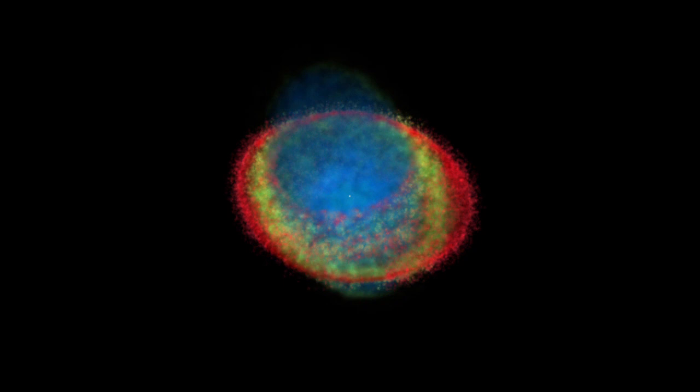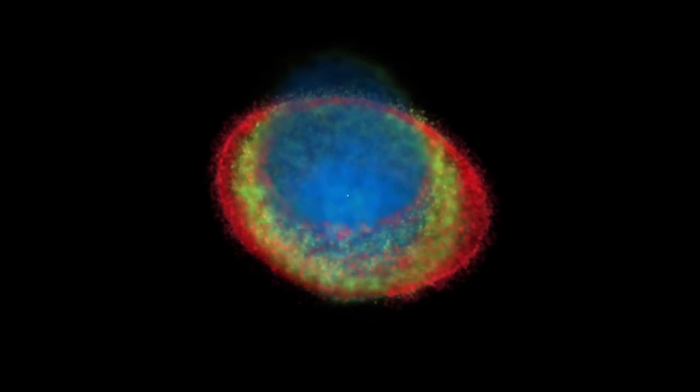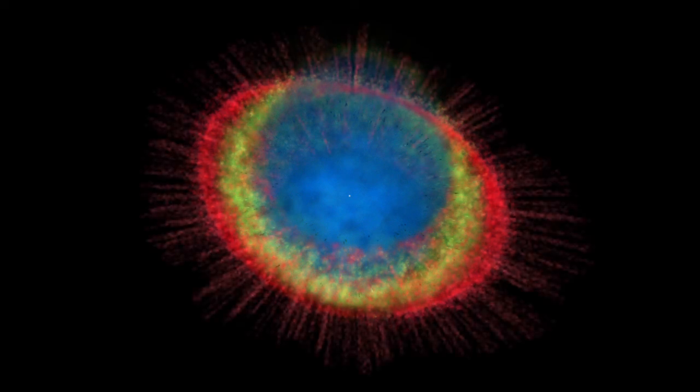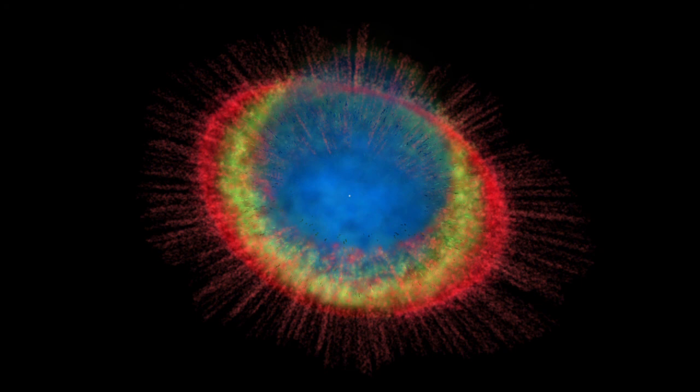A number of dense dark knots of gas circle the inside of the red nitrogen ring and have so far resisted the blast of stellar winds and radiation. The shadows of these knots can be seen as long thin spikes around the ring.